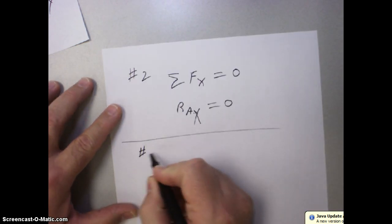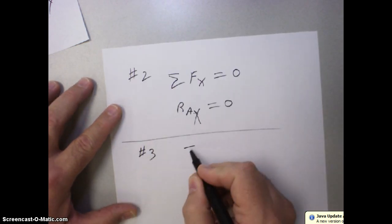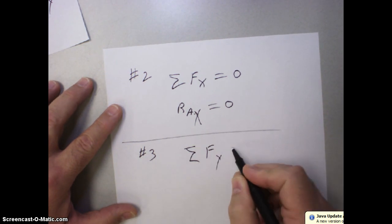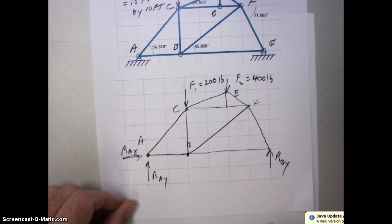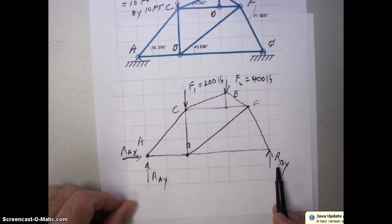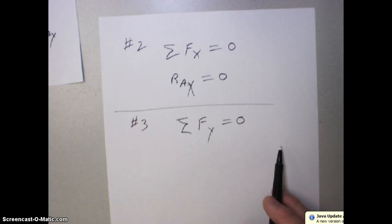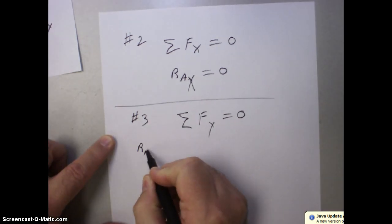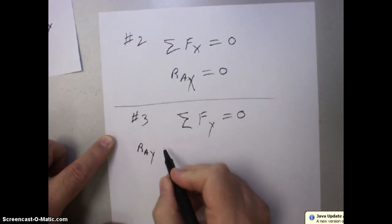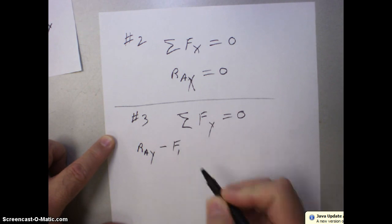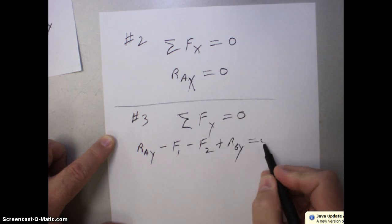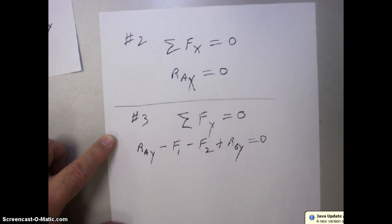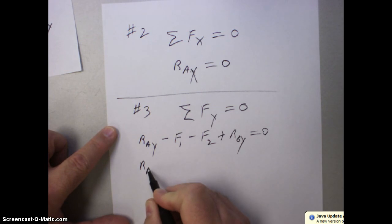So step three, we look at the sum of the forces in the Y direction and set those equal to zero. Remember, Y is up and down. So we have one, two, three, four forces that we have to deal with. So let me list those. We've got RAY minus F1 because it's pointing down minus F2 because it's pointing down plus RGY. It's pointing up as was RAY. Let's just plug in some numbers here.